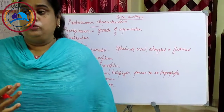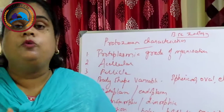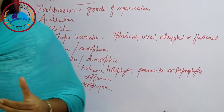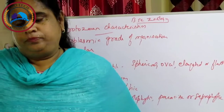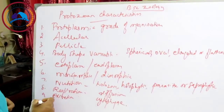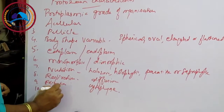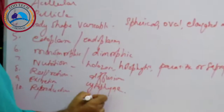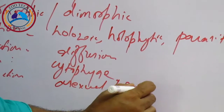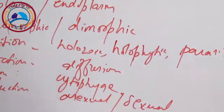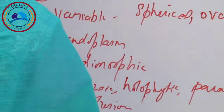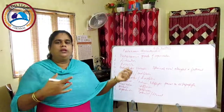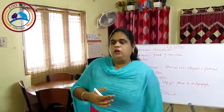Contractile vacuoles perform osmoregulation in freshwater forms and also help in removing excretory products. Reproduction is asexual or sexual. Asexual reproduction involves binary fission, multiple fission, sporulation, and budding.